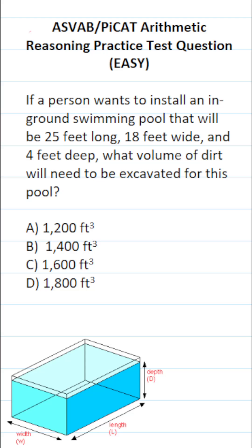This arithmetic reasoning practice test question for the ASVAB and PyCat says, if a person wants to install an in-ground swimming pool that will be 25 feet long, 18 feet wide, and 4 feet deep, what volume of dirt will need to be excavated for this pool?